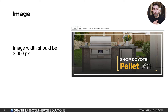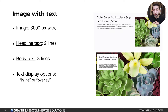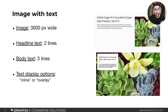Here's an example of what the image module looks like — this would be a full width rectangle. For full width images, you want 3,000 pixels wide with variable height. The image with text module also requires 3,000 pixels wide for full width; for smaller square images, 3,000 by 3,000 is recommended. You have a headline (two lines) and body text (three lines), with display options of inline or overlay.